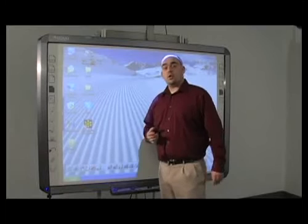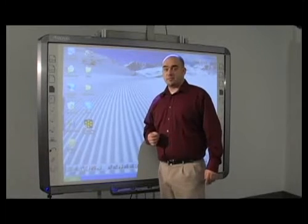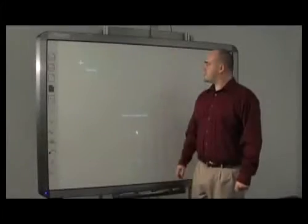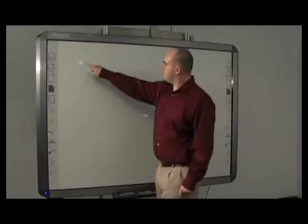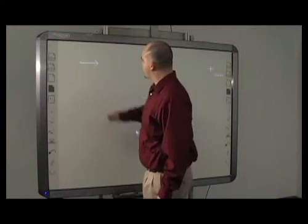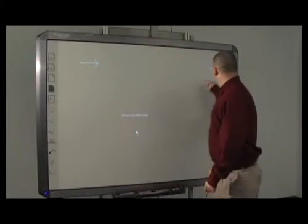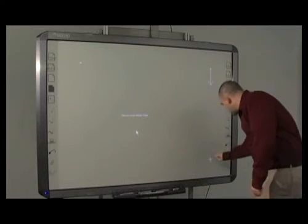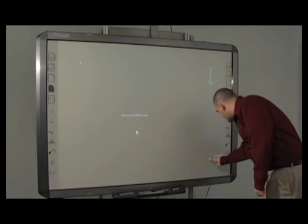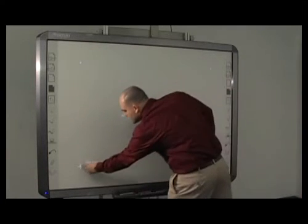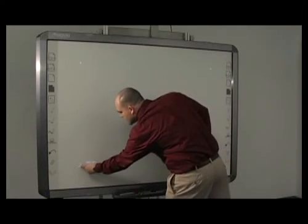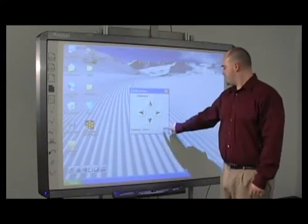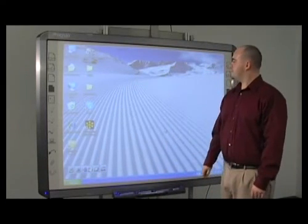First, let's go over one quick setup step: calibrating your whiteboard. On your system tray, down by your clock, you should see the whiteboard icon. Let's fully calibrate. A black screen should come up with a point that says 'click here.' Once you click on the four points, the points on your whiteboard should be exact. Nice job!